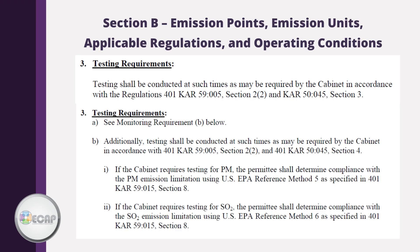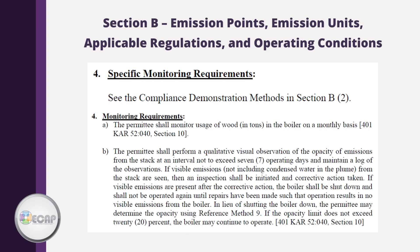Testing requirements will vary depending on the operation. Some require frequent testing; others require testing upon request from the Energy and Environment Cabinet. Monitoring requirements are written into the permit so the facility remains aware of the state of the emission unit and observes operations for any changes that may occur over time. Monitoring requirements ensure that emissions from the emission unit are supervised, tested, sampled, or otherwise observed on a regular and ongoing basis. Types of monitoring include product usage, visual limitations, and more. This section may fully describe the requirements or reference a different section of the permit, like the opacity limit listed in Section B2.